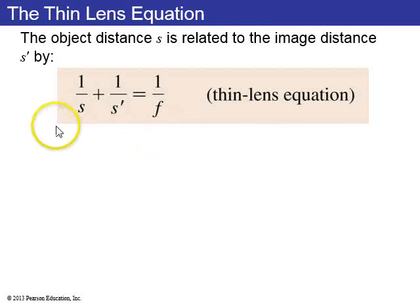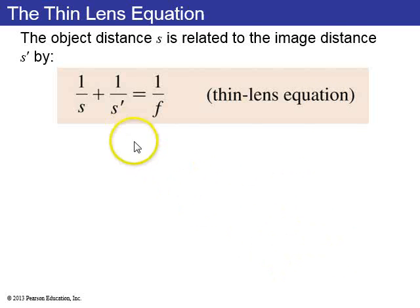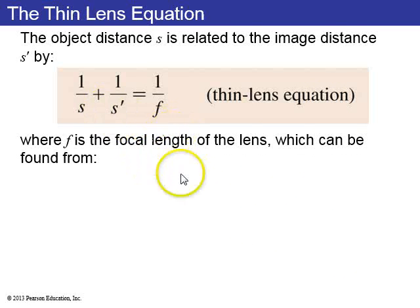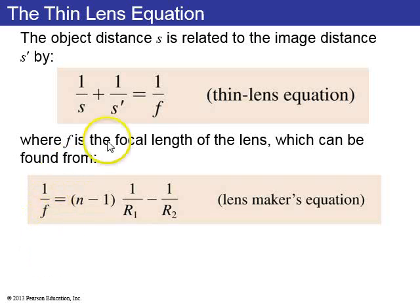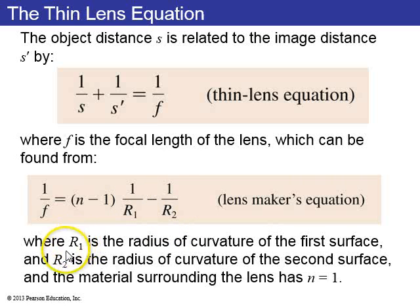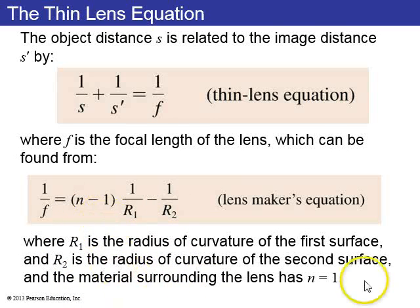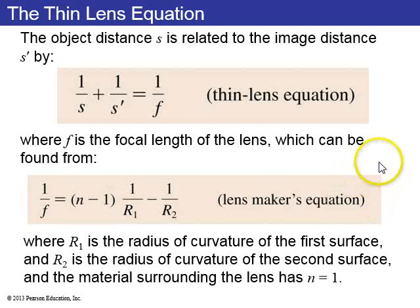The thin lens equation can be derived from the single-surface equation by treating a lens as two spherical surfaces. The result is the lensmaker's equation: 1/f = (n − 1)(1/R1 + 1/R2), where R1 is the radius of curvature of the first surface, R2 is the radius of curvature of the second surface, n is the index of refraction of the glass, and the lens is assumed to be immersed in air with index of refraction 1.